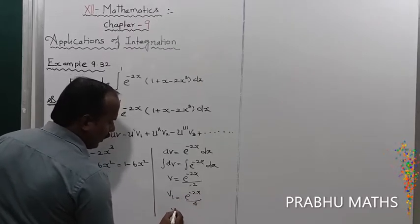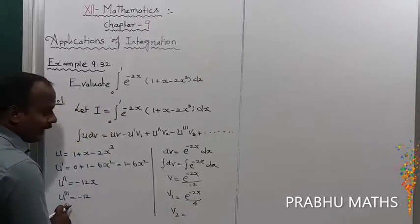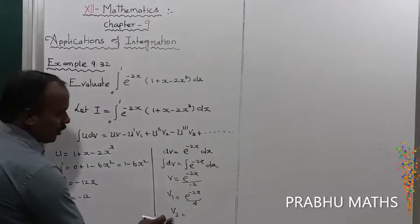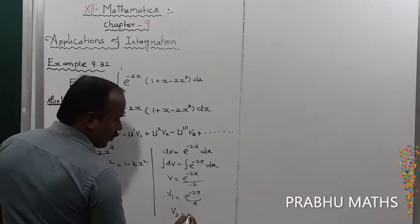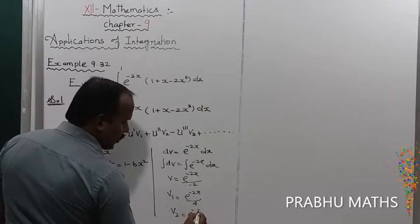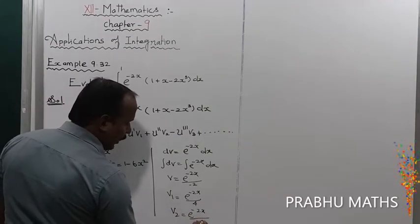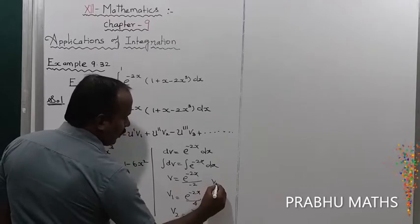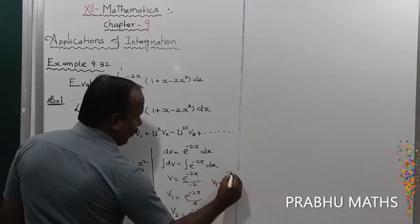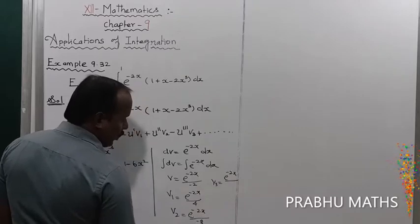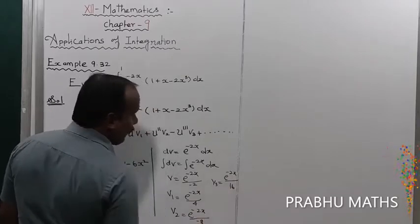Continuing: v₂ = e^(-2x) / (-8), obtained by integrating three times. Then v₃ = e^(-2x) / 16, obtained by integrating four times.